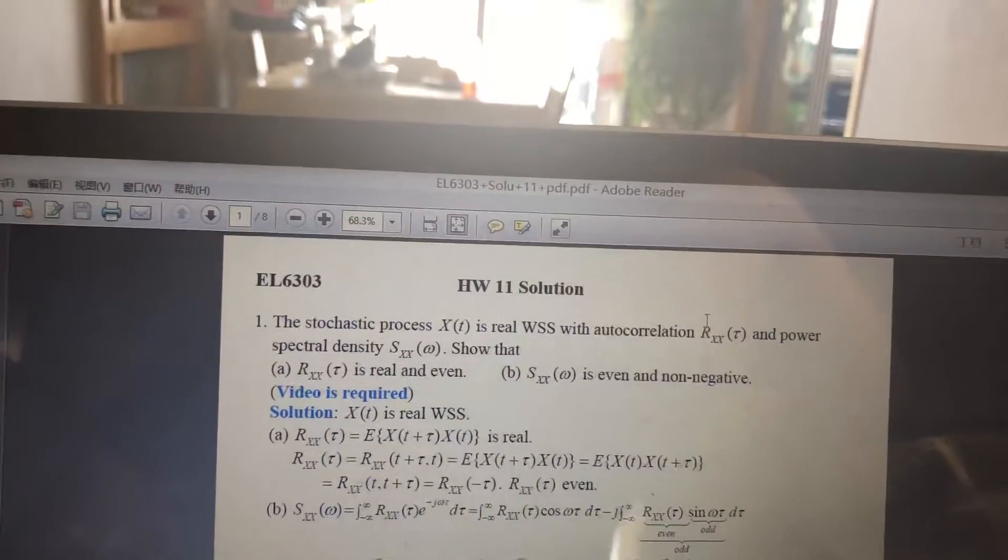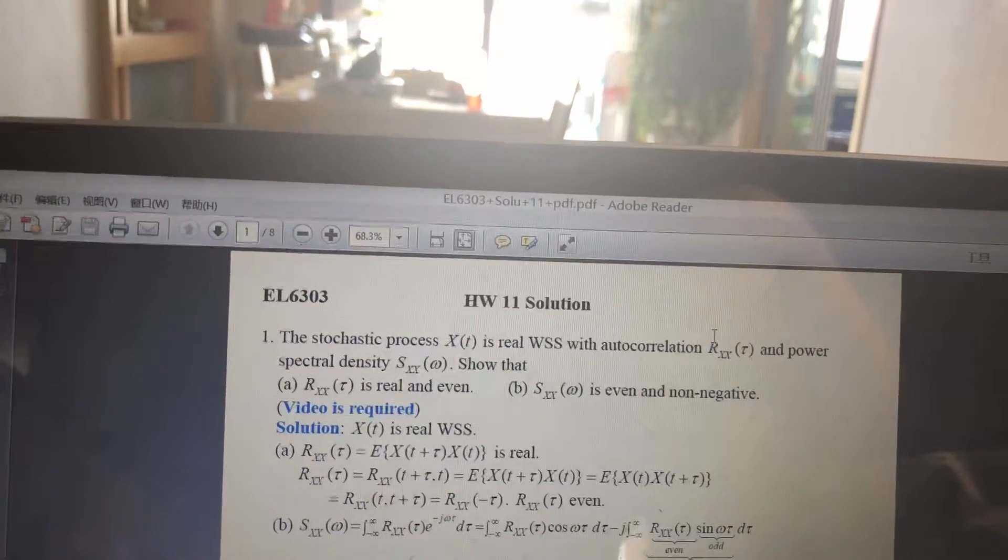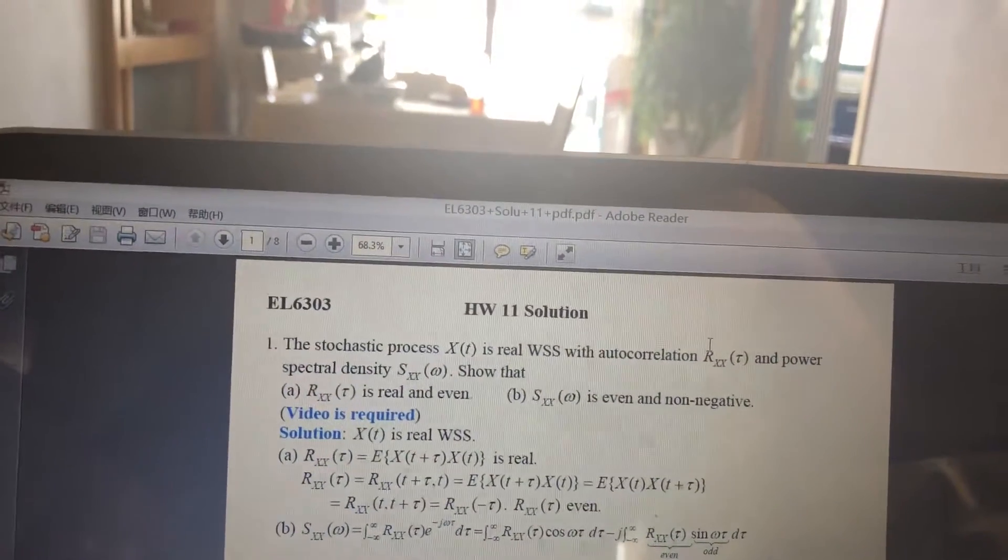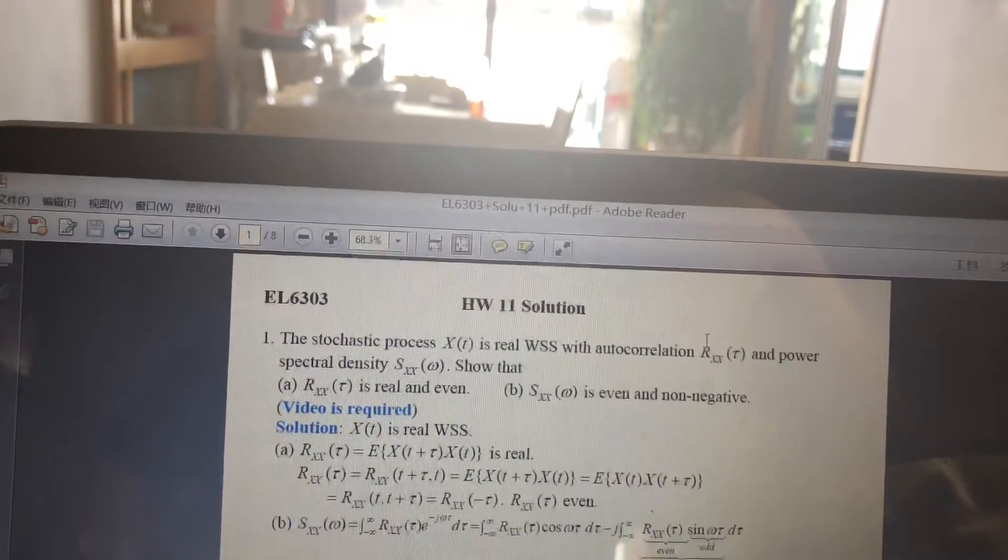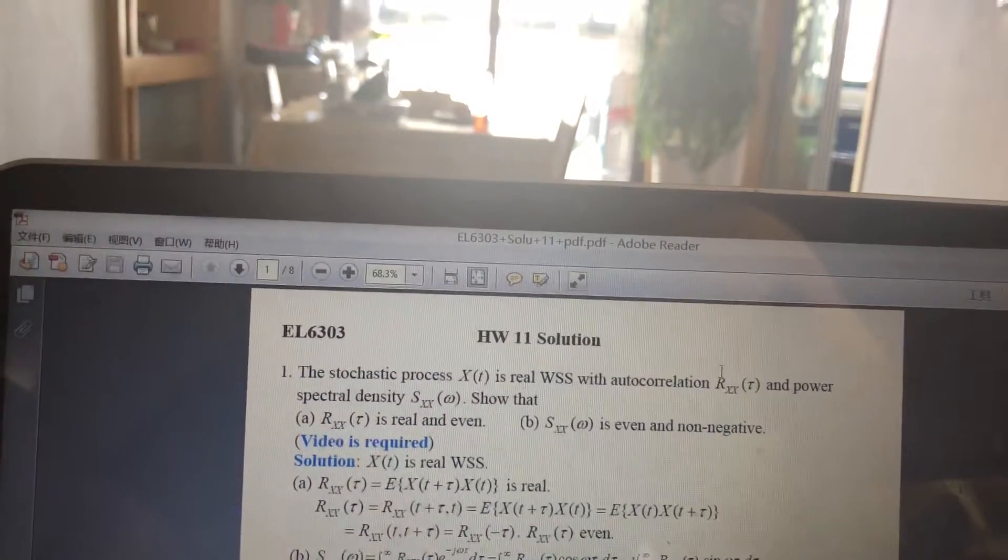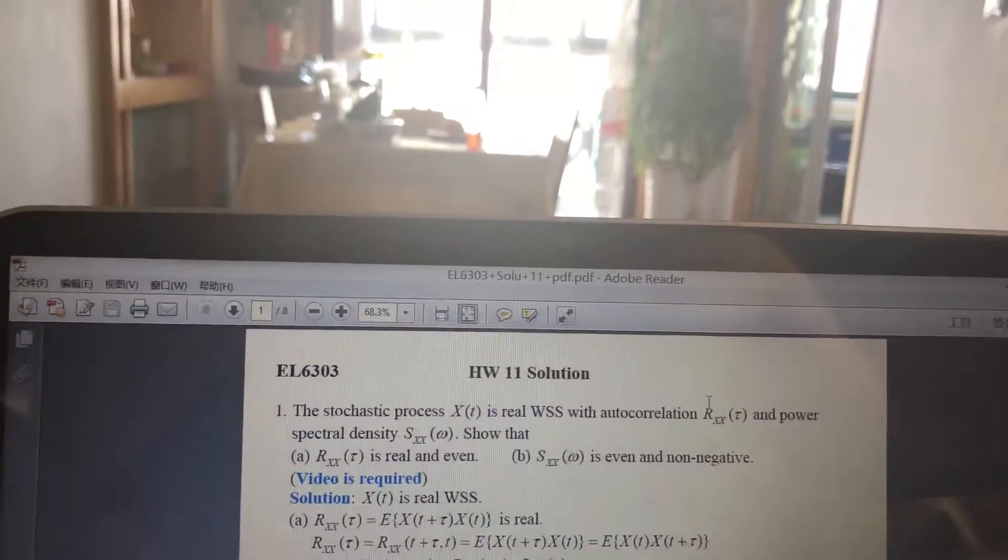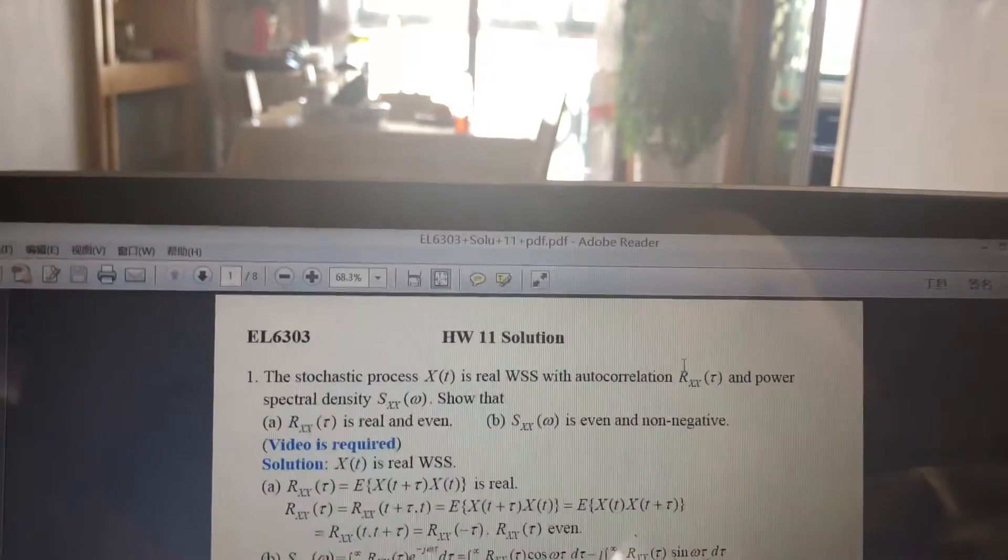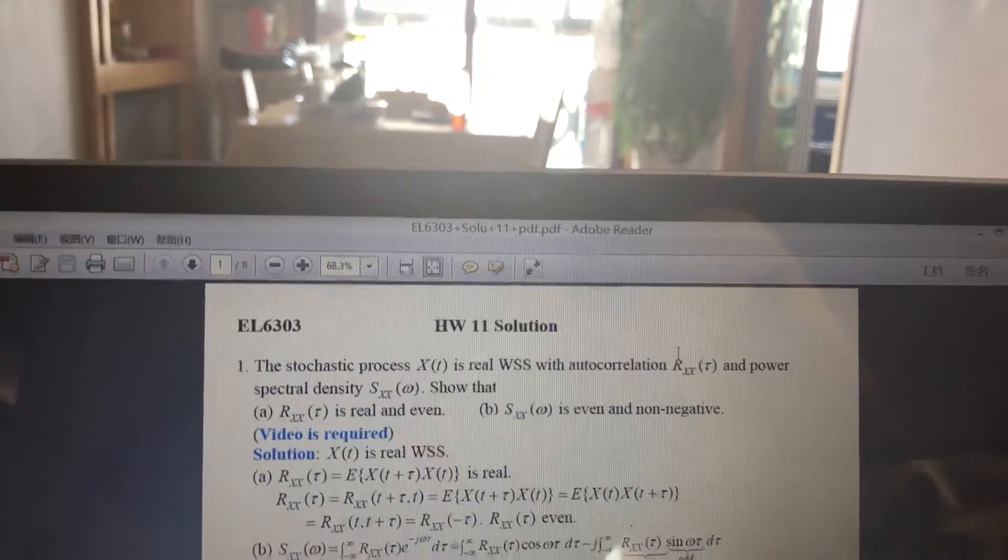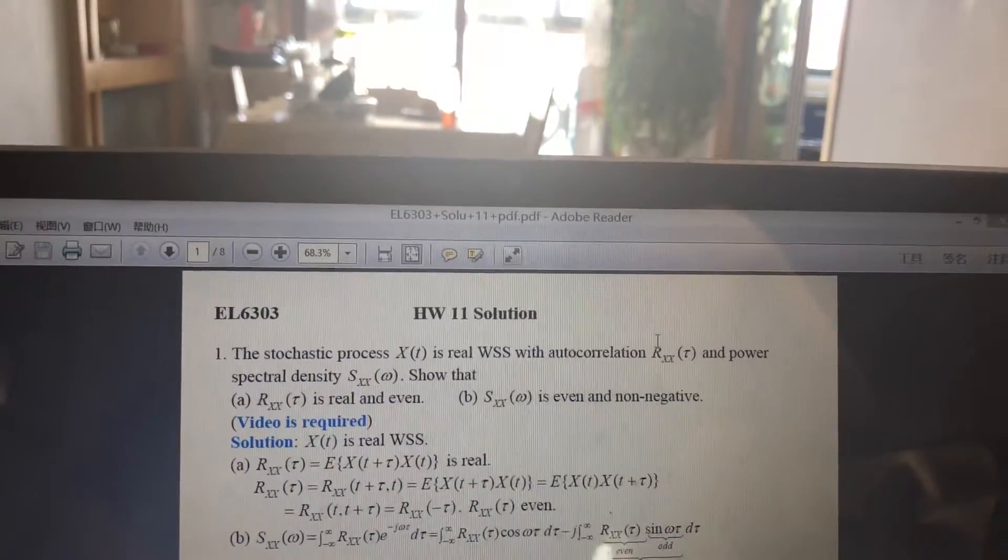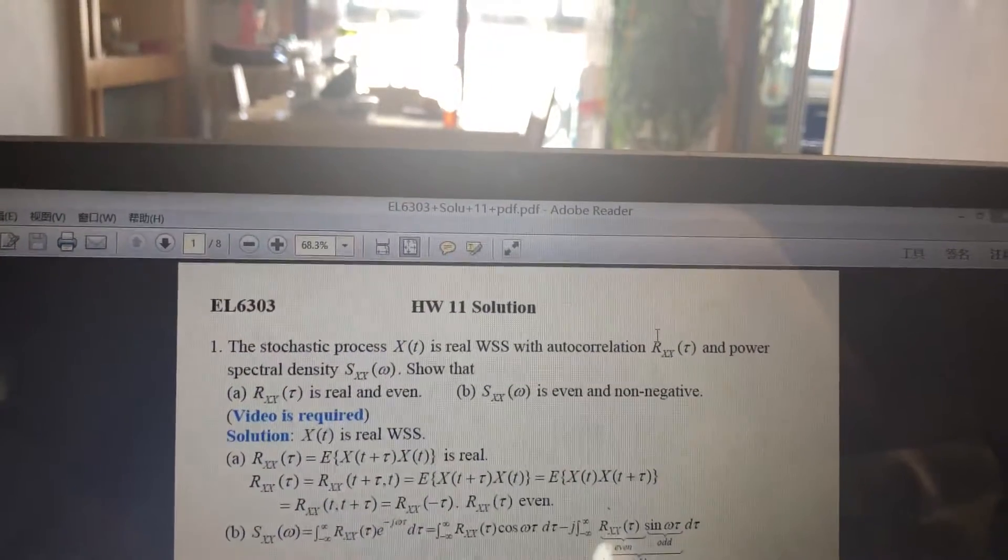The question is: the stochastic process X(t) is real WSS with autocorrelation R_XX(τ) and power spectral density S_XX(ω). Show that R_XX(τ) is real and even, and S_XX(ω) is even and non-negative.